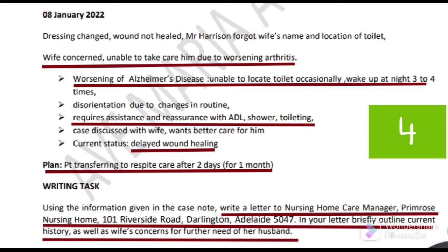Care was discussed with wife and she wants better care for him - this is the request by his wife. Current status is delayed wound healing. When writing the exam, the current status is delayed wound healing. The plan is patient transferring to respite care after 2 days for 1 month. This is the plan - how to mention it in the introduction paragraph and the recommendation paragraph. In the recommendation, they didn't mention anything regarding dressing changes but this relates to assistance and reassurance with daily living activities, which we can mention in the recommendation paragraph.